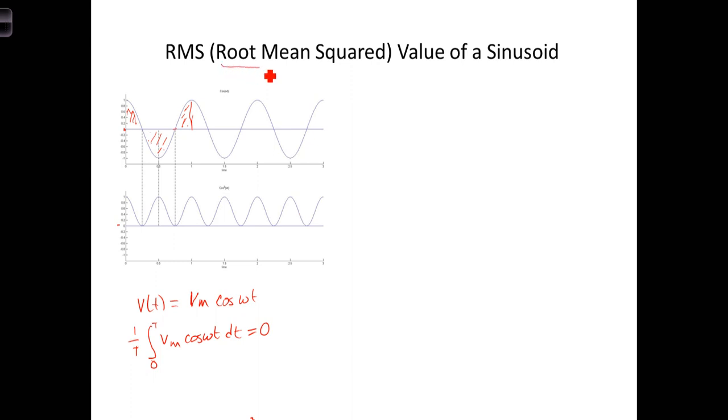In other words, the RMS value, or this effective value of the voltage, is found by squaring the voltage, calculating the average of the square, and then taking the square root of that. Let's go ahead and show you what we mean here. If V(t) is equal to V_m cos(ωt), then V²(t) is equal to V_m² cos²(ωt). We're going to calculate the average of that, which is done by calculating from zero to T. Let's bring the V_m² out in front, since it's a constant. Cos²(ωt) dt.